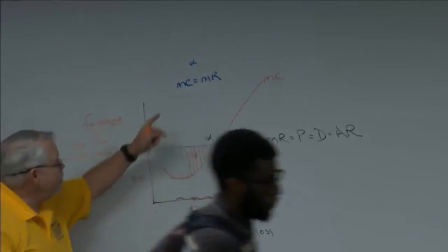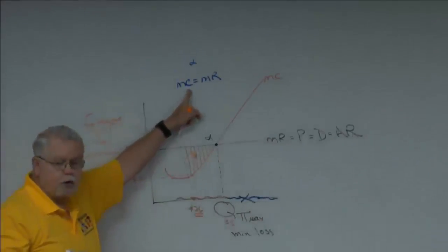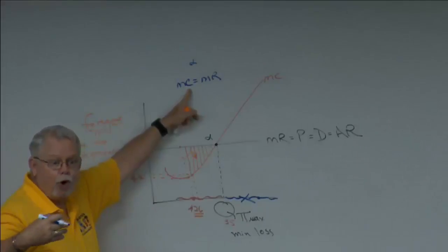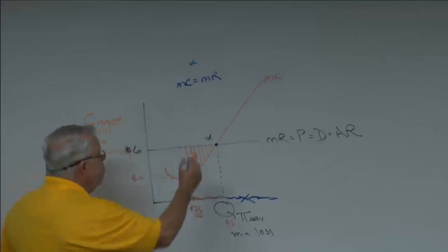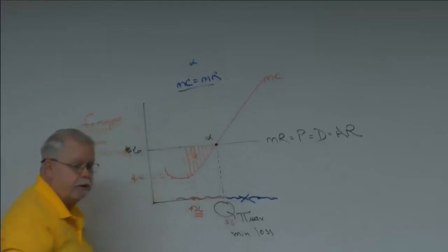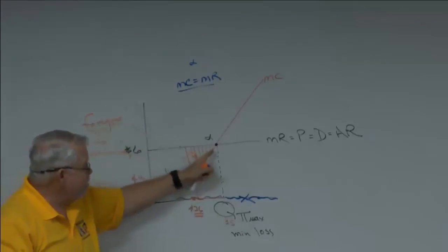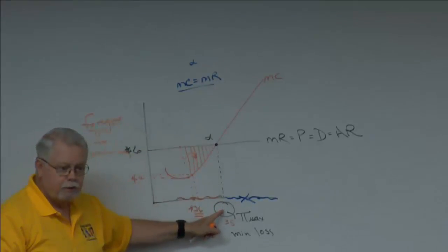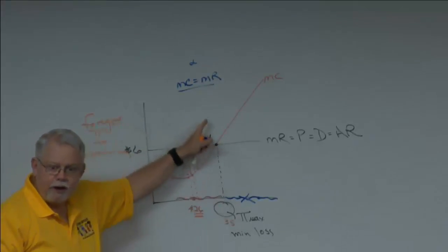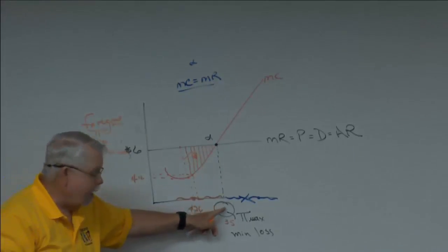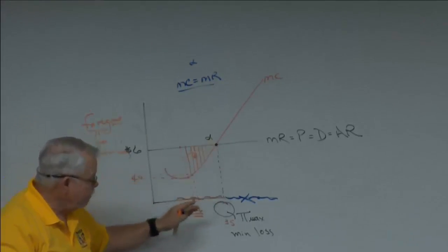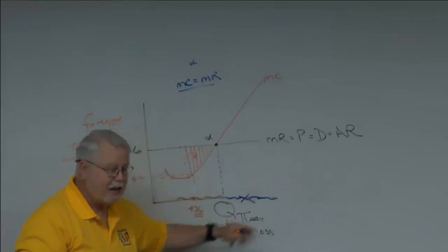Remember that our definition of marginal cost includes a reasonable profit — an accounting profit. So we want to go all the way out to alpha. There's no economic profit on that last unit, but there's an accounting profit, so take it.